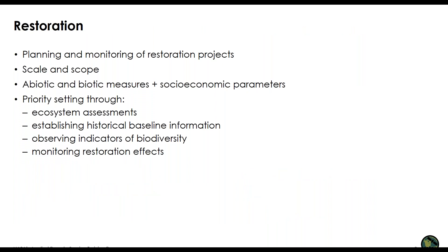Turning to remote sensing for restoration: applications of Earth observations can support both the planning and monitoring phases of restoration projects. Restoration projects have a geographic context, so spatial data and tools such as remotely sensed data and GIS can be very useful in determining the scale and scope of projects. Socio-economic parameters such as human population densities, protected areas, industrial land use, private land ownership, and benefit flows can also be mapped and considered. Earth observations are also very useful for priority setting through ecosystem assessments, establishing historical baseline information, observing indicators of biodiversity, and monitoring restoration effects over time.